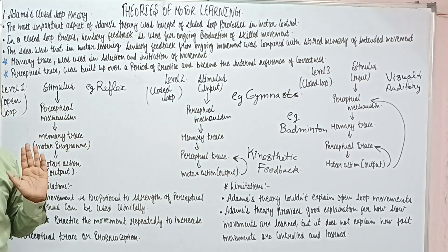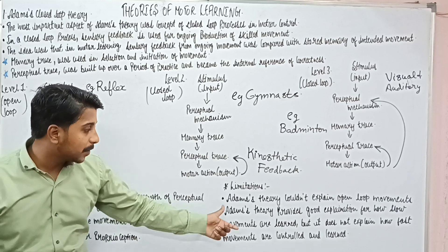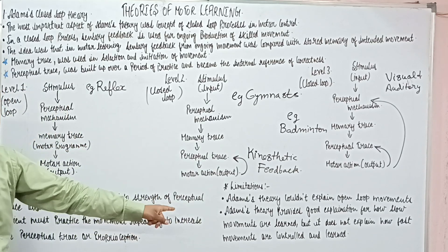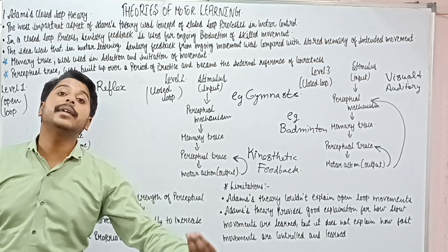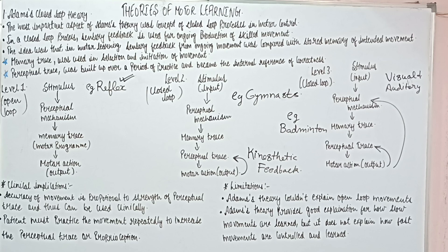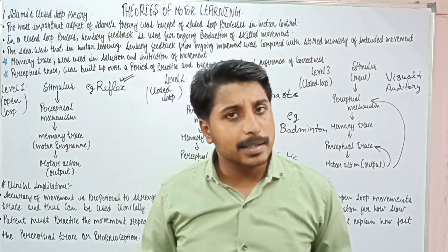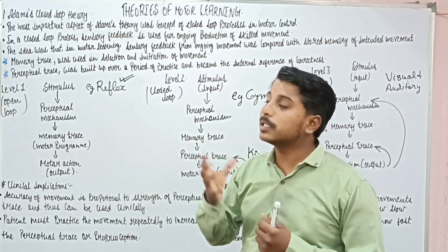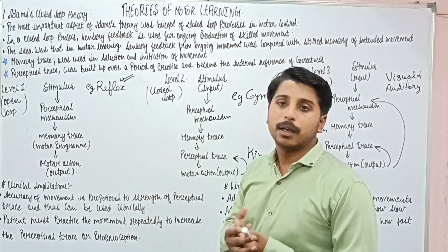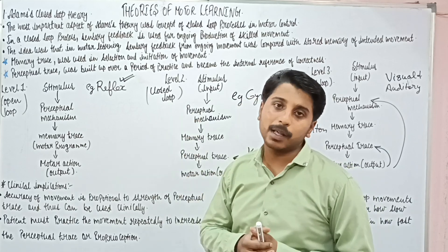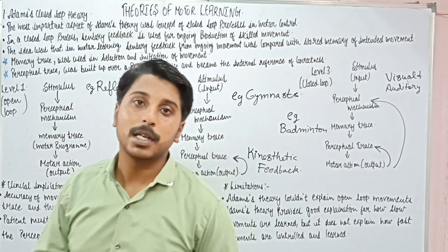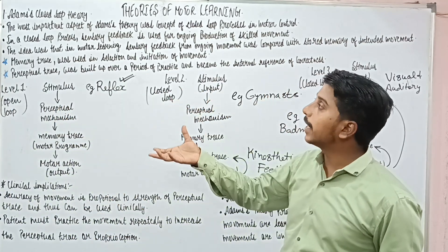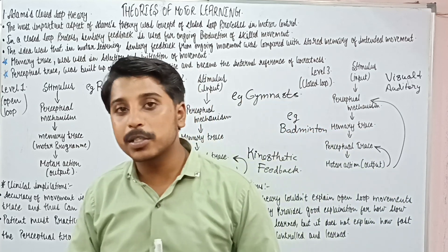As for limitations: Adams' theory could not explain open loop movements well. Adams' theory provides a good explanation for how slow movements are learned, but it failed to explain fast movements — how they are controlled and learned. Even in reflex, which occurs very fast, there is no sensory feedback, and the question of how these fast movements are controlled was a loophole that the theory could not address. So the theory works either as closed or open loop theory, but with these limitations. With this we are completing the first theory of motor learning, which is Adams' Closed Loop Theory. Thank you to one and all.